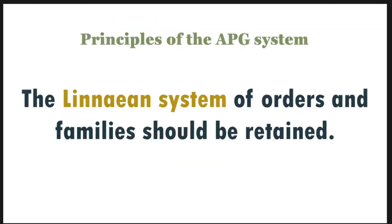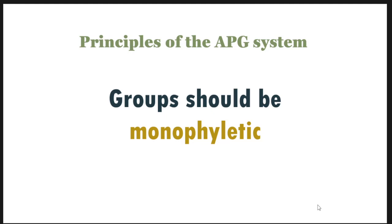Let us look into the principles of APG system. The first principle says that the Linnaean system of orders and families should be retained. That means in a taxonomic hierarchy from species up to the order level, we have to maintain the Linnaean system — that is species, genera, family, order, and so on. But above that level it is not a fixed entity; it is called groups, and groups should be monophyletic in nature.